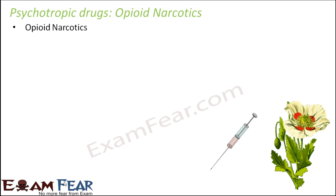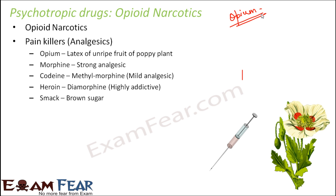What are opioid narcotics? They are called opioid because the name comes from opium. Opium itself is one of the psychotropic drugs which fall under the category of opioid narcotics. All the other drugs in this category are derivatives of opium. Opioid narcotics are basically painkillers, and opium is naturally obtained from a part of the poppy plant.